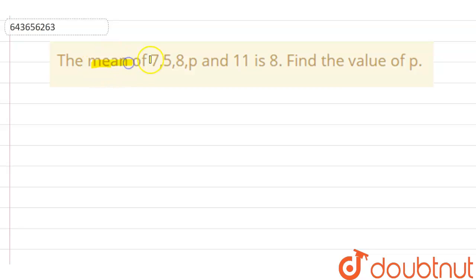Here, the question is the mean of 7, 5, 8, p and 11 is 8. Find the value of this p, right?